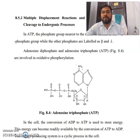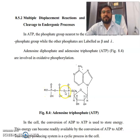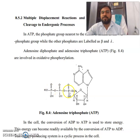In ATP — adenosine triphosphate — the phosphate group nearest to the ribose is termed the alpha phosphate, while the other phosphates are labeled as beta and gamma. You know adenosine diphosphate and adenosine triphosphate: this structure with three phosphates, that is why it is called triphosphate, and these are involved in oxidative phosphorylation.